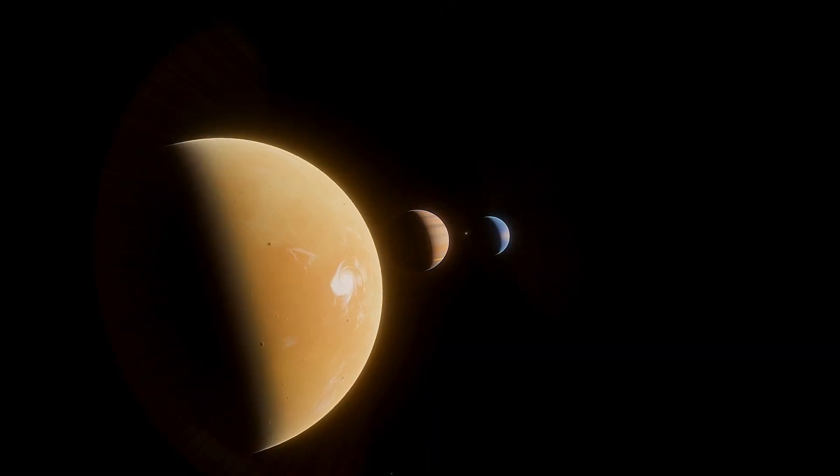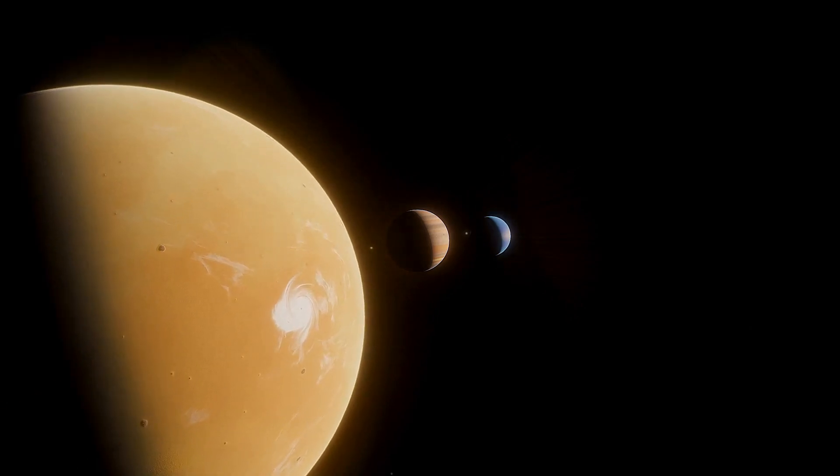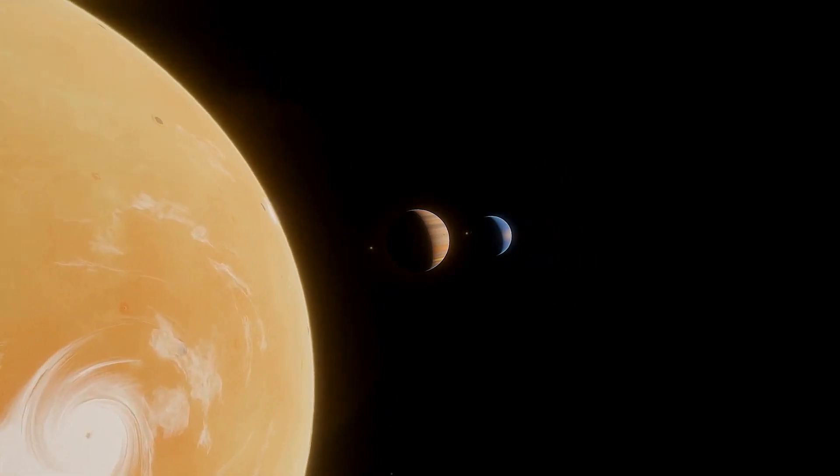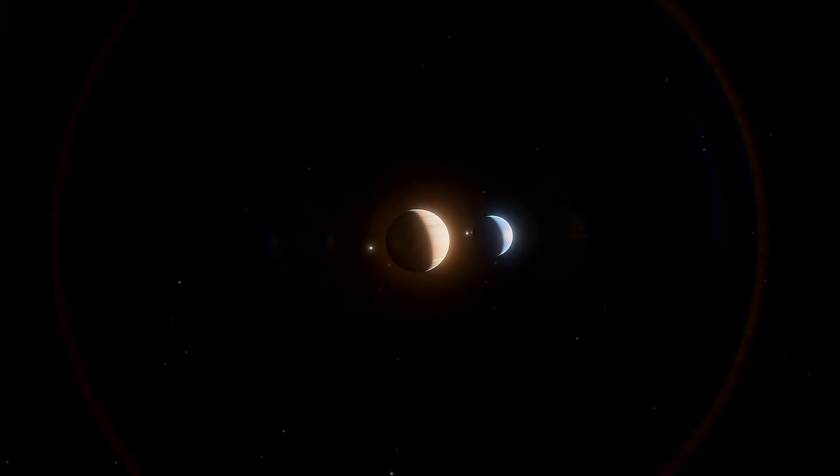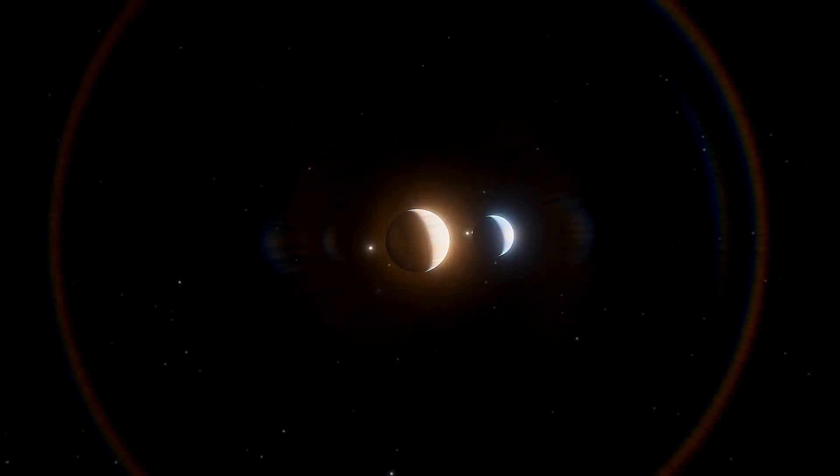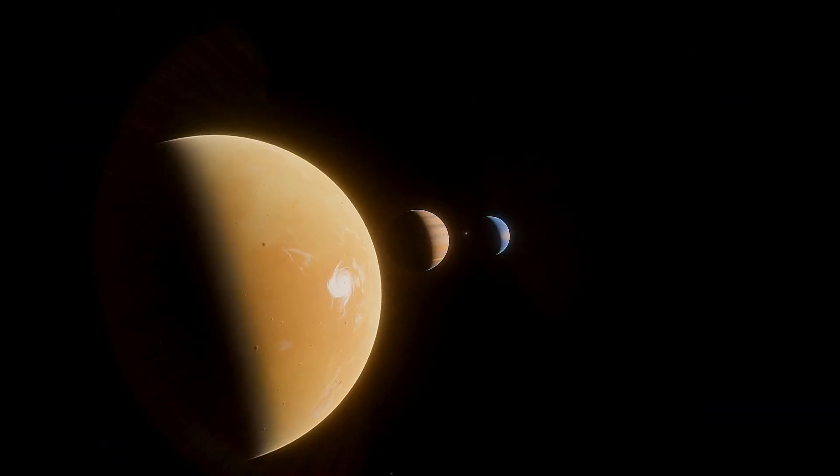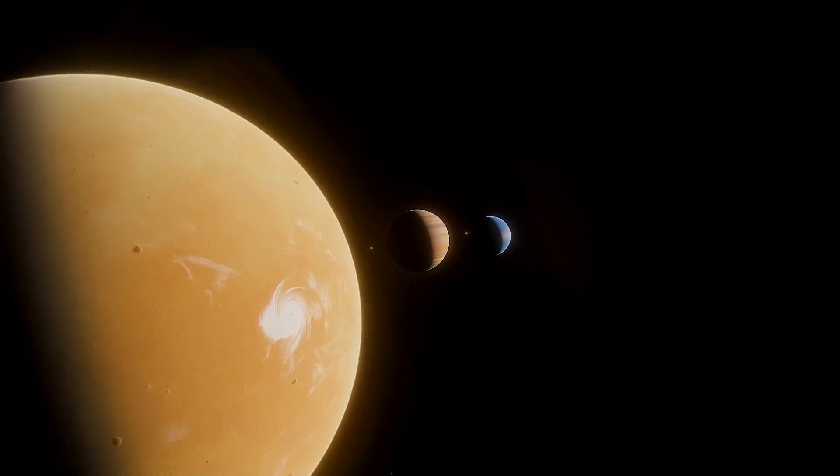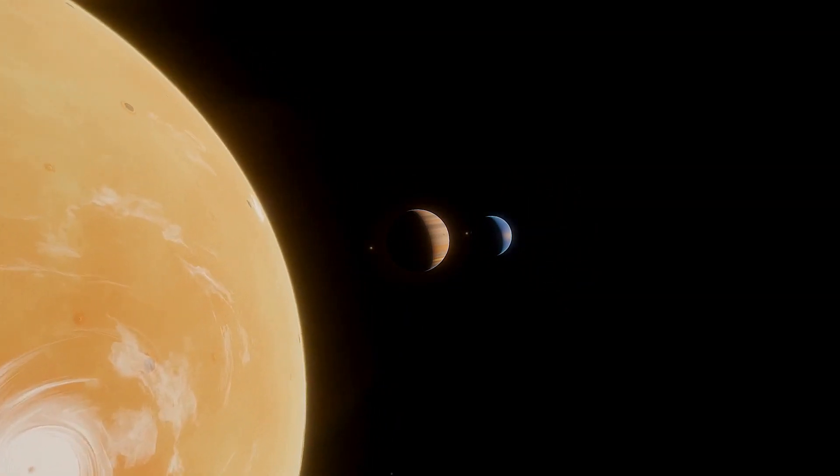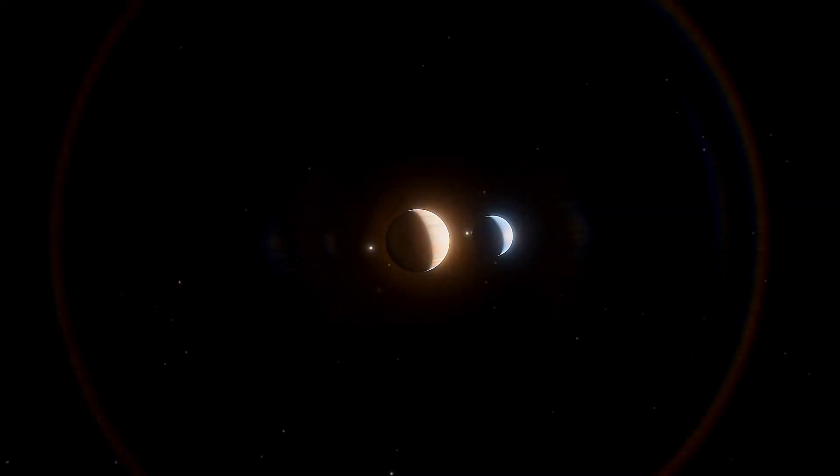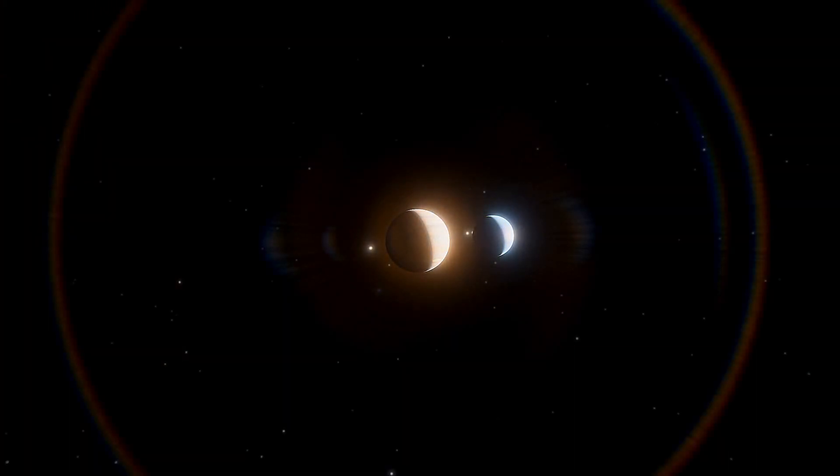HD 40307 G orbits its star much closer than Earth orbits the Sun. This close orbit places it in a region known as the habitable zone, where temperatures could allow for liquid water. This means that a year on HD 40307 G is only about 197 Earth days long. Seasons would change more rapidly and the planet would complete its orbit in nearly half the time Earth does.